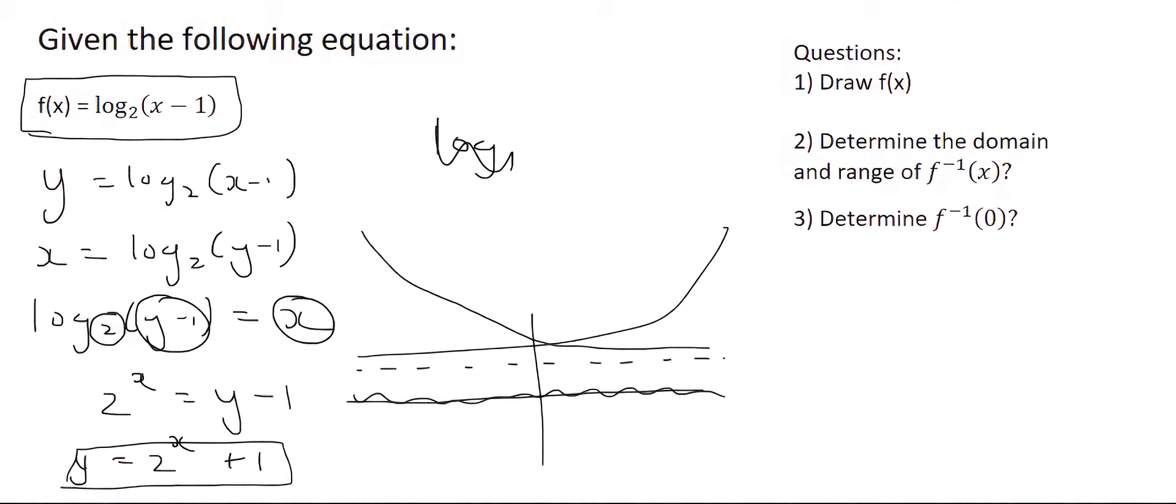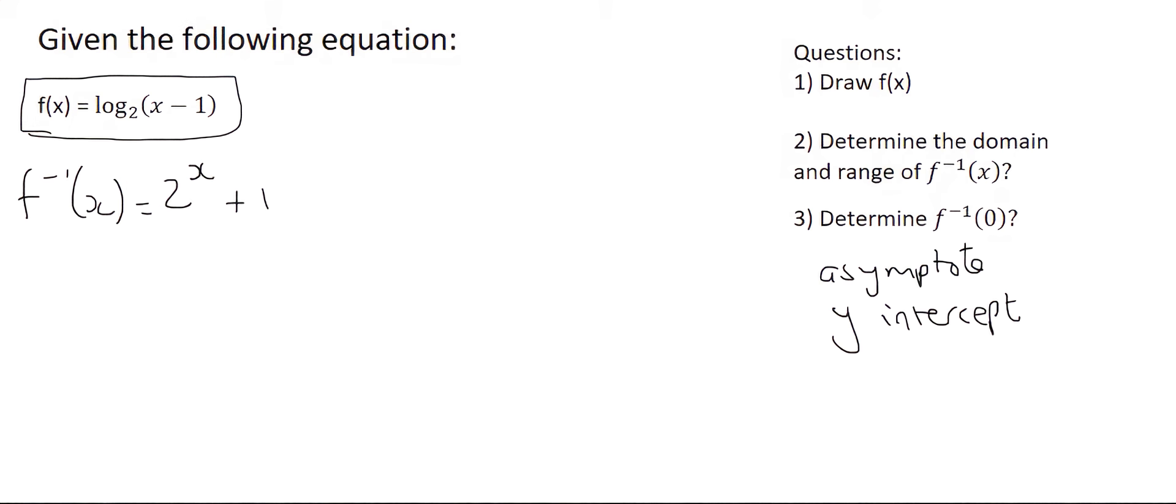So what we need to do is find the asymptote, which is the dotted line, so we're going to calculate that, find the asymptote, and then we're also going to find the y-intercept. And so I've written this as f minus 1, just to remind us that this is the inverse, it's not the log graph. So let's go draw that inverse so long, so the asymptote is always this line over here, so that's going to be at plus 1.